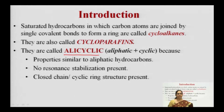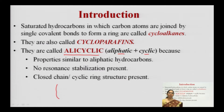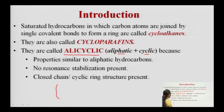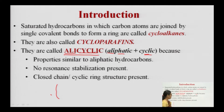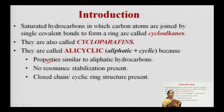How do we understand the word 'alicyclic'? We dissect it: 'ali' comes from 'aliphatic' and 'cyclic' comes from the word 'cyclic'. Aliphatic refers to the saturated carbon framework of the compound, and cyclic refers to the ring structure. Hence they are called alicyclic. There are many reasons to call cycloalkanes alicyclic compounds — the principal reason is that they have properties similar to aliphatic hydrocarbons.